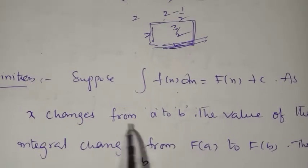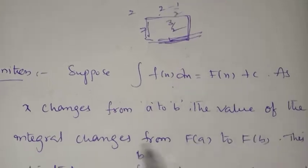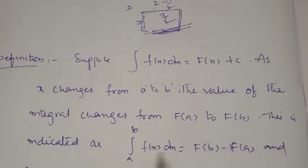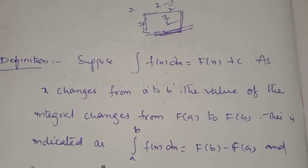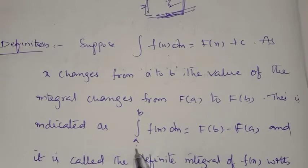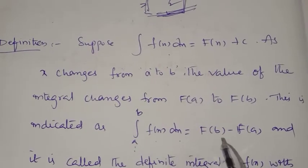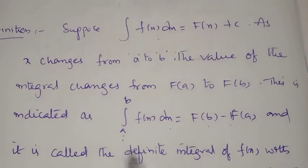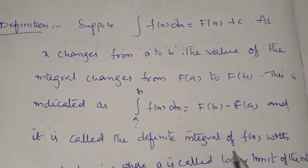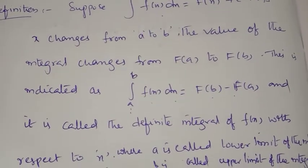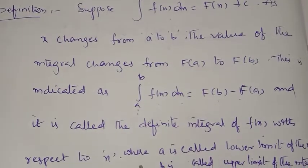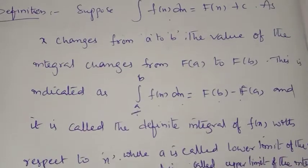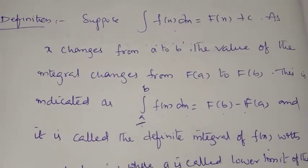This is indicated as ∫ from a to b of f(x)dx equals f(b) minus f(a), and it is called the definite integral of f(x) with respect to x, where a is called the lower limit and b is called the upper limit of the integral.